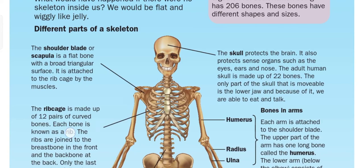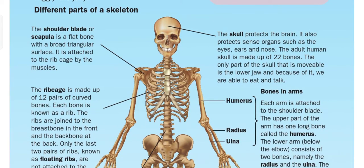Here you can see different parts of the skeletal system. Let's start with the skull. The skull protects the brain and also protects sense organs such as eyes, ears, and nose. The adult human skull is made up of 22 bones, and the only movable part of the skull is the lower jaw, which allows us to eat and talk.